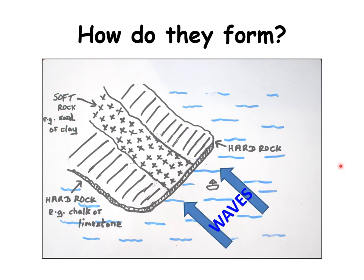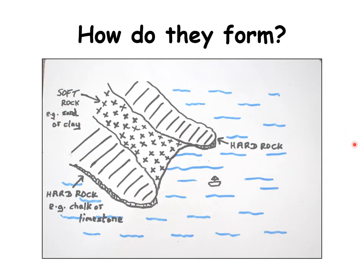In come the waves. The waves come in from the sea and will repeatedly crash into this coastline. They will be doing erosion through the processes of hydraulic action and abrasion, and this coastline will be getting worn away over time. The softer rock will erode away quicker than the harder rock.